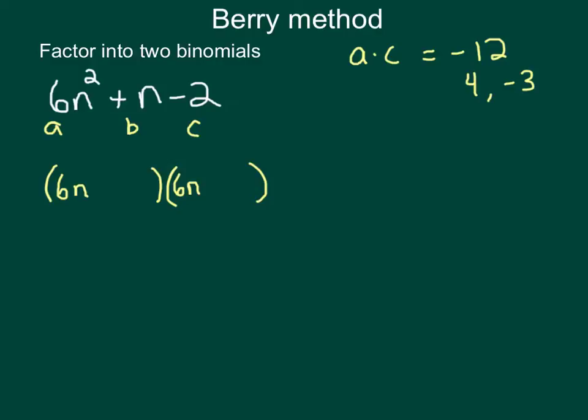Now inherently, we know that this is going to be wrong, because 6N times 6N would give me 36N squared, not 6N squared. But realize this is just a step. Once we get to a couple other steps down the process, then we'll fix that problem.